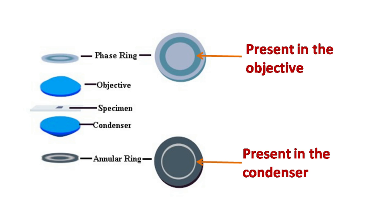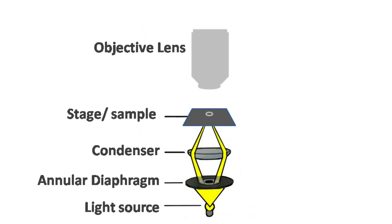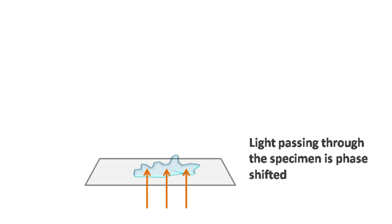The specimen is illuminated with a ring of light coming from the annular diaphragm. Now two things happen when the light passes through the specimen: number one, phase shift depending on the thickness of the specimen, and number two, refraction in different directions because of the uneven surface.